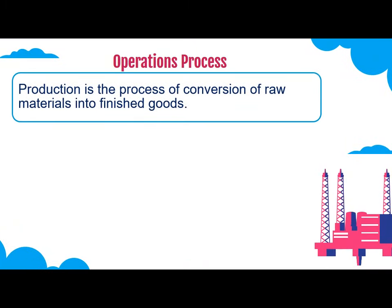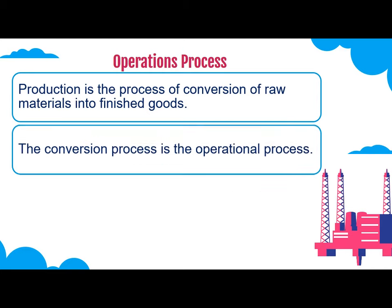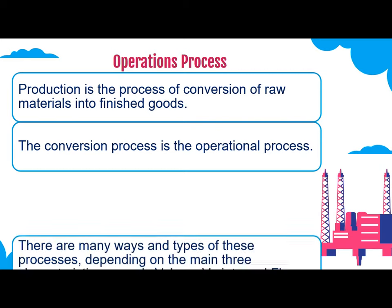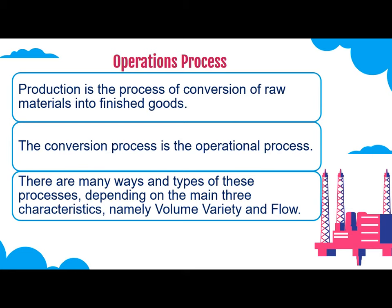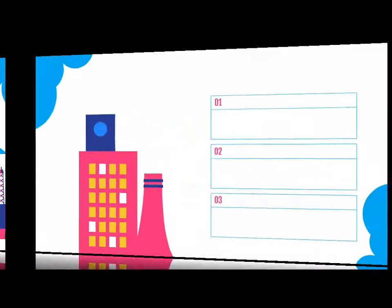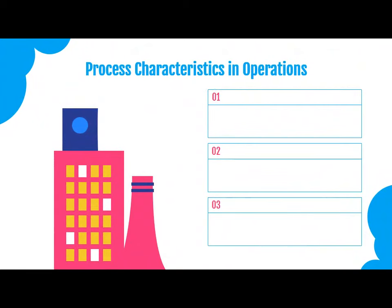Now we will understand Process Characteristics in Operations. Production is the process of conversion of raw materials into finished goods, and this conversion process is known as an operations process. There are many ways and types of these processes depending on three main characteristics: volume, variety, and flow. These characteristics have a significant influence on the processes.